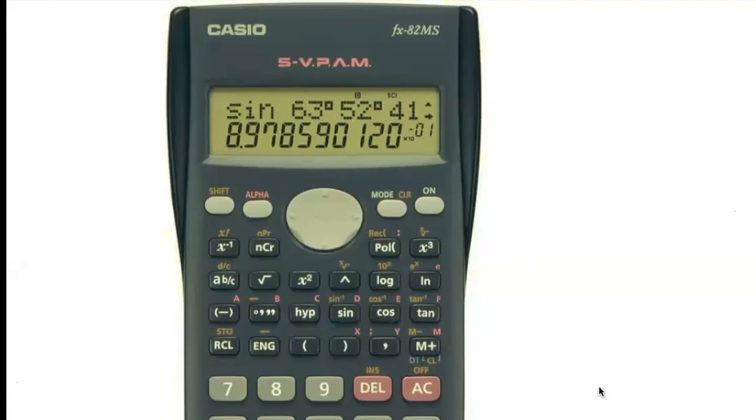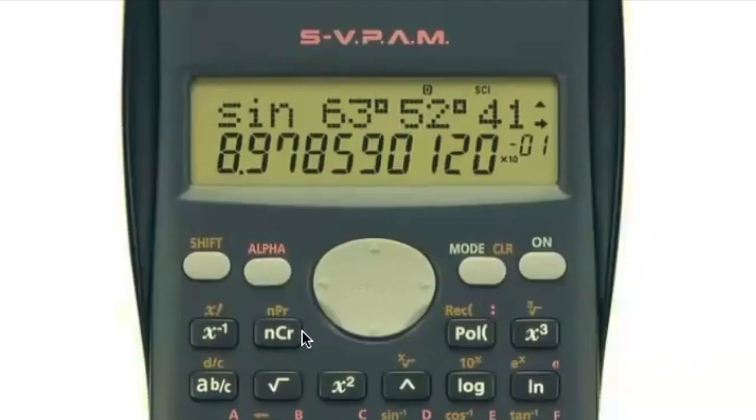Here's another calculator—Casio is another very common brand that students might have. Just to show you what you're looking for, you can see there is an nCr button, nPr is above it, so you would need to hit the shift key to access that. You can see your x factorial key is right next to it. Usually you'll find your probability functions in a similar location.